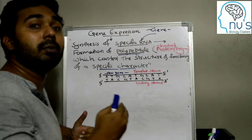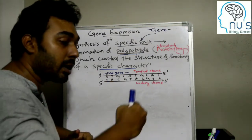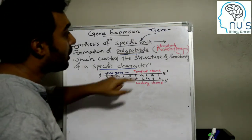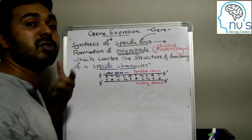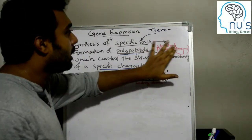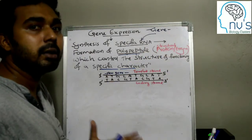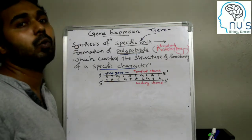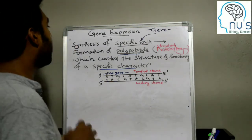The gene produces mRNA, and then the mRNA produces more protein. The mRNA involves enzyme and structural proteins — another protein — and this is how gene expression works.